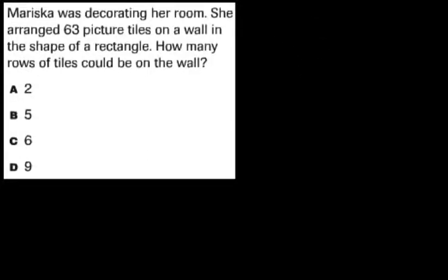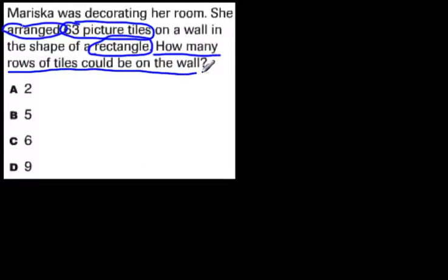Let's try some and see what they look like as problems. As I usually do, as we always do when we're reading in class, we want to make sure we're marking the text. That means we're circling key information, showing that we're being an active reader. Mariska was decorating her room. She arranged, oh, key word there, she arranged 63 picture tiles. How many rows of tiles could be on the wall?